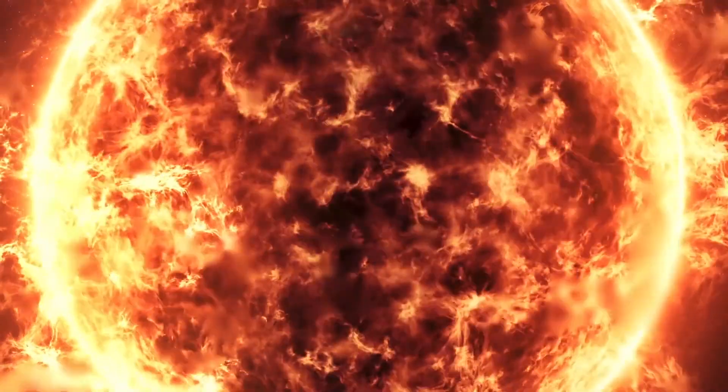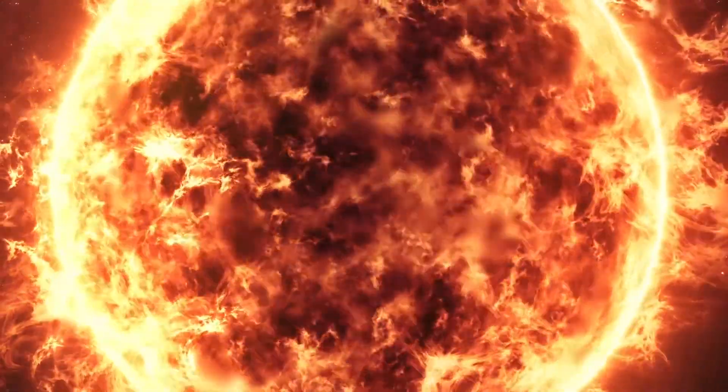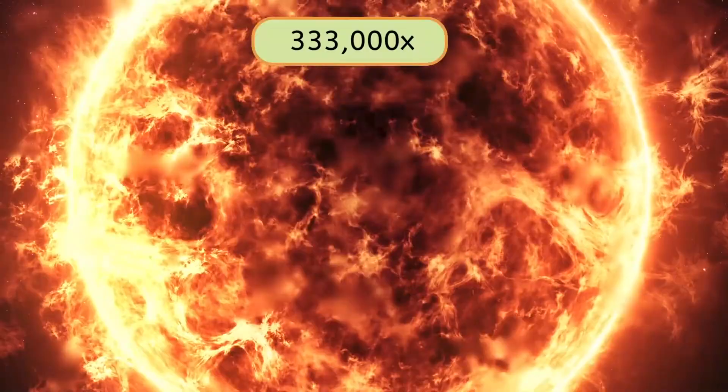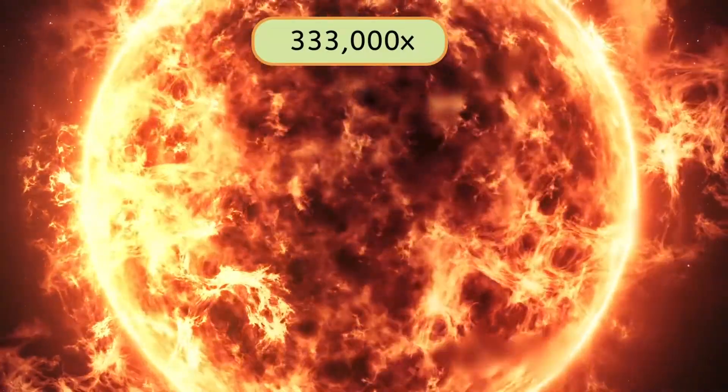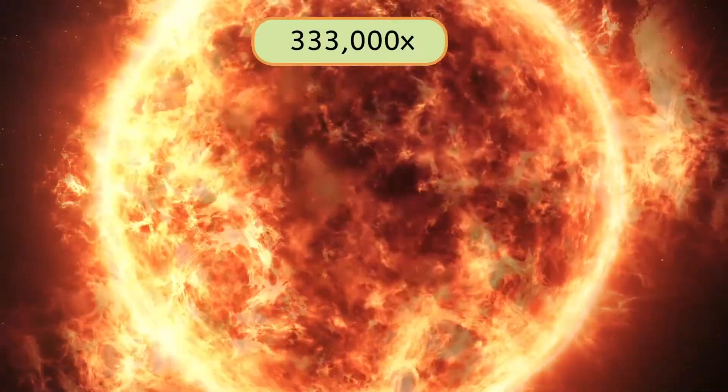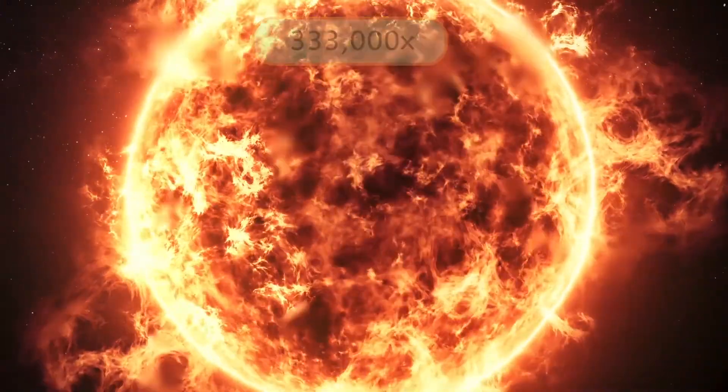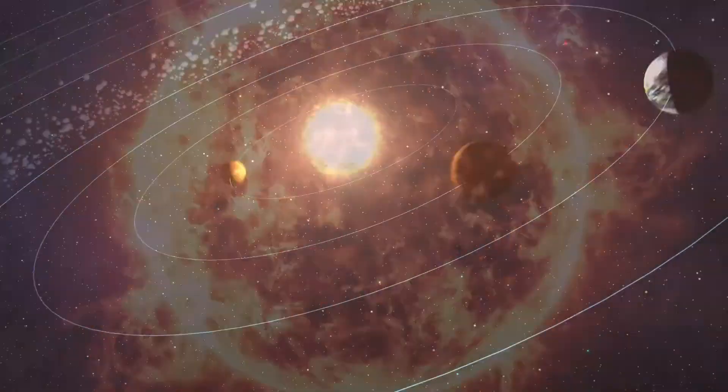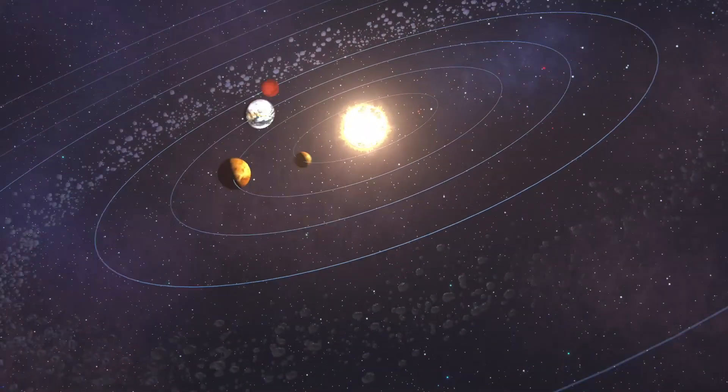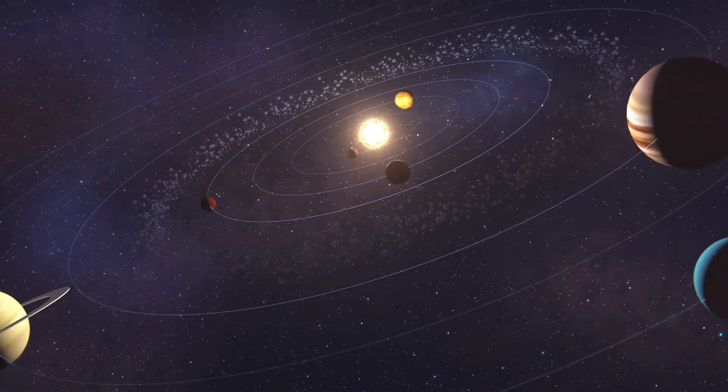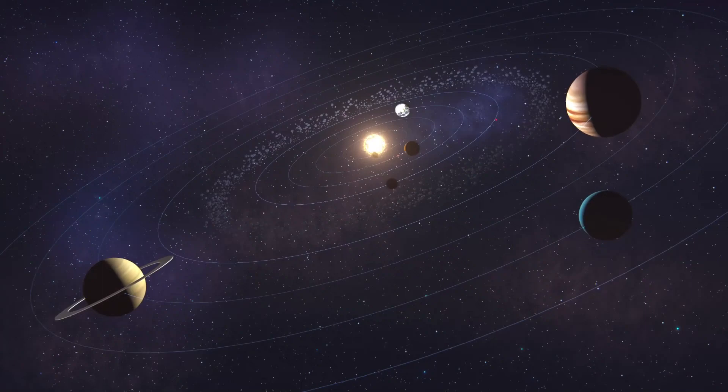Well, the Sun, for one. The Sun is 333,000 times more massive than the Earth. So, its gravity is also way stronger. The Sun's force of gravity is so strong, it's actually what keeps all the planets in our solar system in orbit around it.